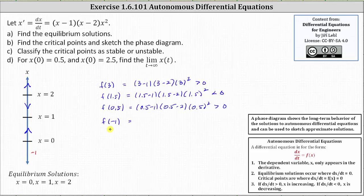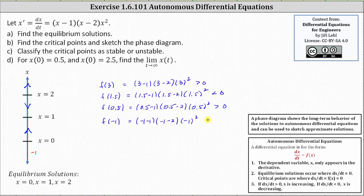Now we need to determine the sign of f of negative one. f of negative one equals the quantity negative one minus one times the quantity negative one minus two times the square of negative one. Here we have a negative times a negative, which is positive, times the square of a negative, which is also positive, resulting in a positive value or a value greater than zero. This indicates when x is less than zero, as t approaches infinity, x of t is increasing, which we indicate using an up arrow.